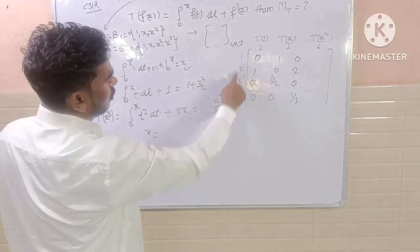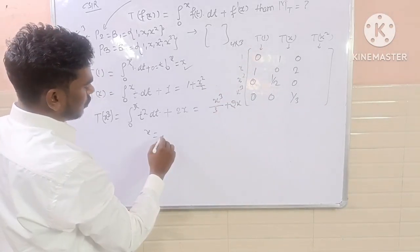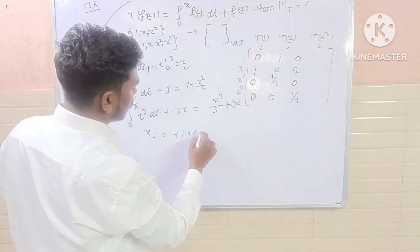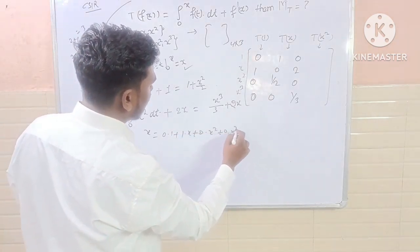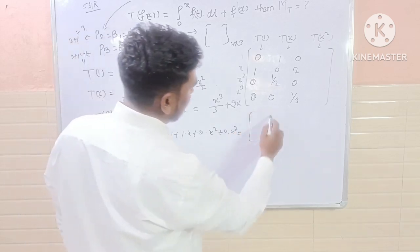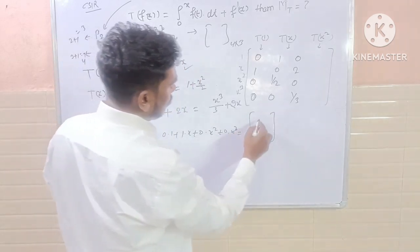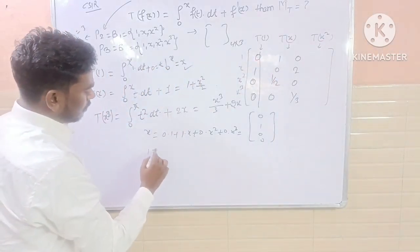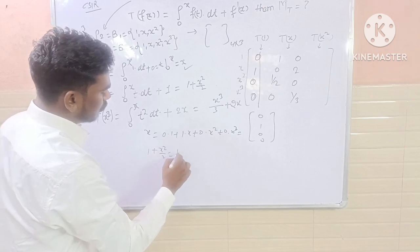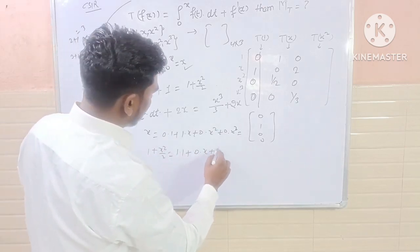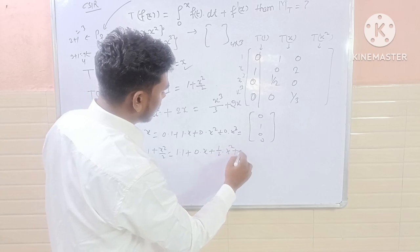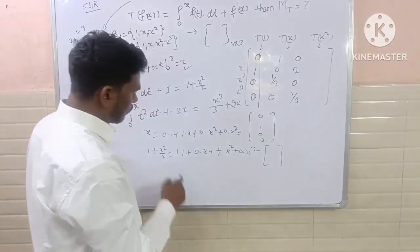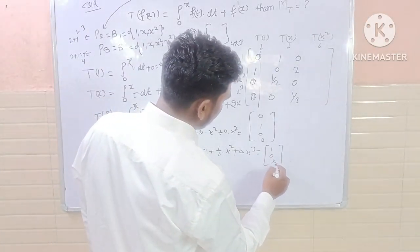Of these images, so can I write 0 into 1 plus 1 into x plus 0 into x square plus 0 into x cube. So can I write 1 into 1 plus 0 into x plus half times x square plus 0 times x cube. So this must become the column vector 1, 0, half, 0.